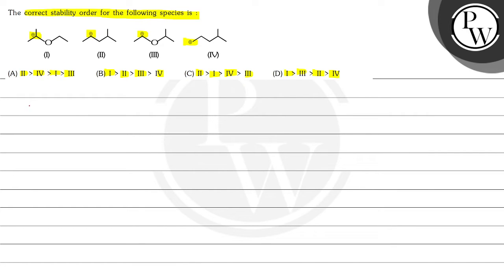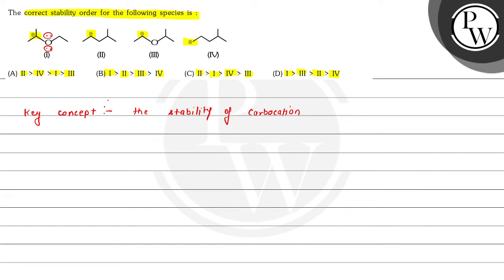So we can write here our key concept on the stability of carbocations. Here, oxygen has lone pairs and adjacent to these lone pairs a carbocation is present. So this is a mesomeric stabilized carbocation, and a mesomeric stabilized carbocation is the most stable.